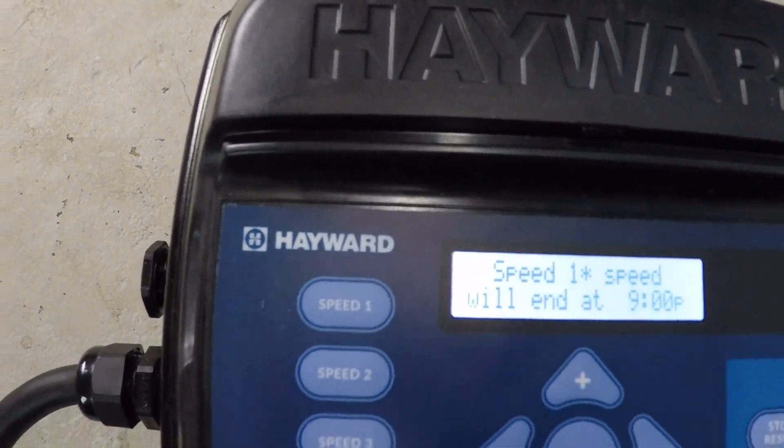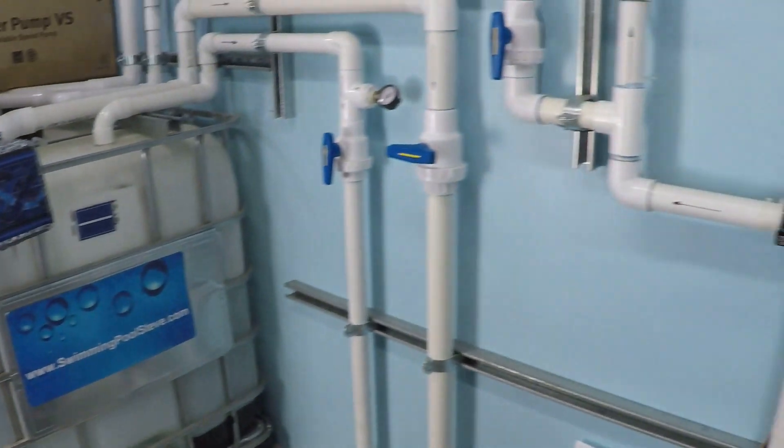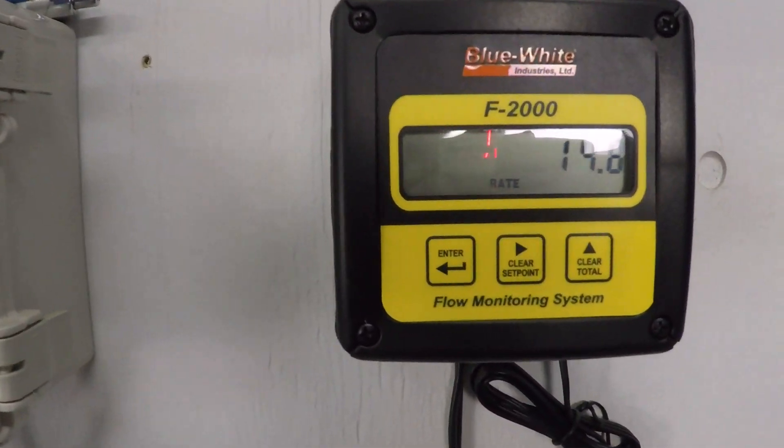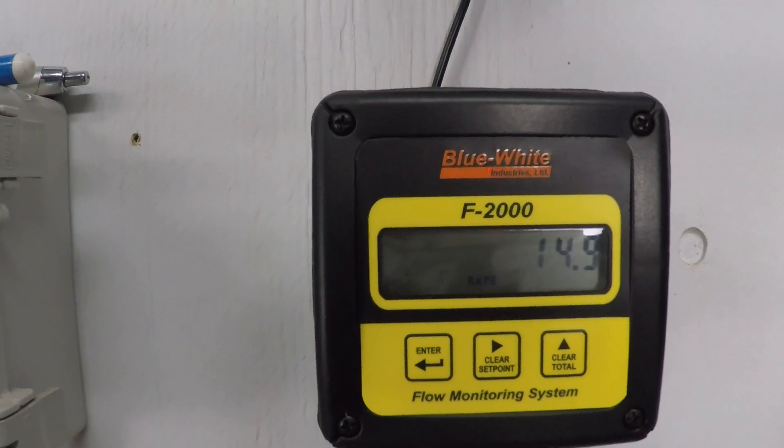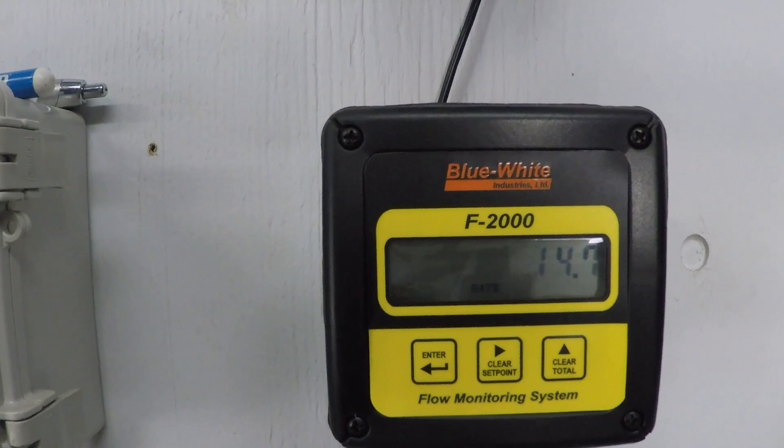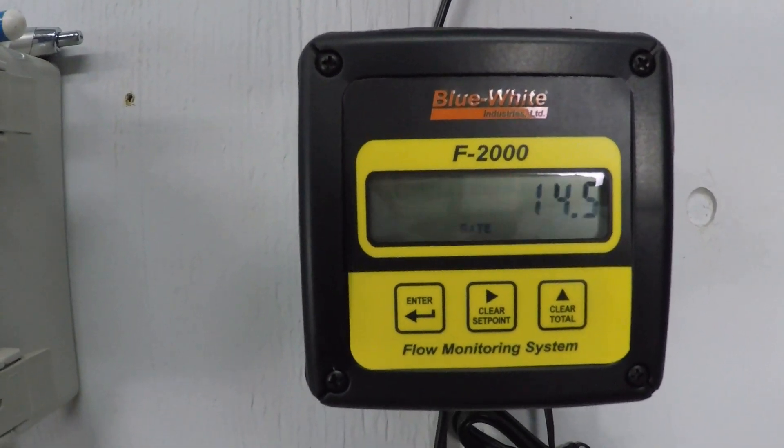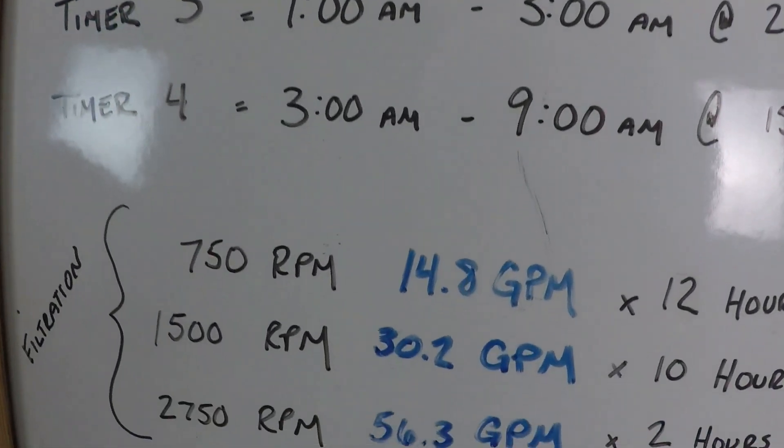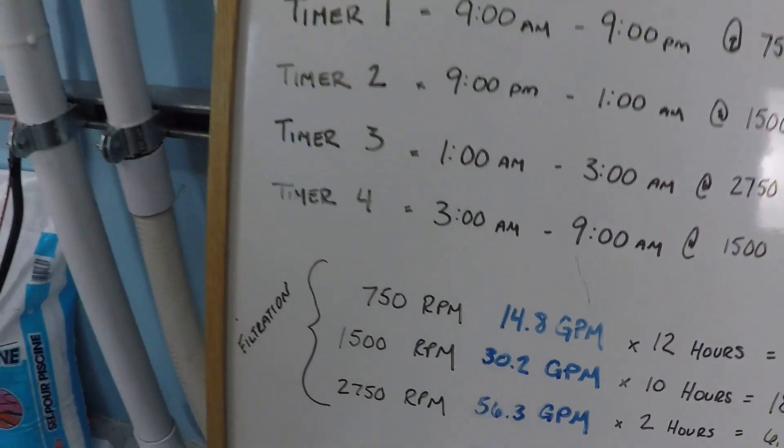So, there we are at 750 rpm. And 14.7. I've got it at 14.8. A little bit of fluctuation there. And we've got that at 14.8. So, let's jump up to 1500 rpm.